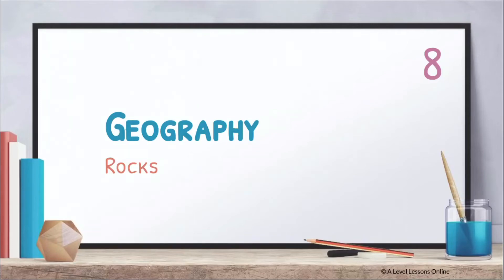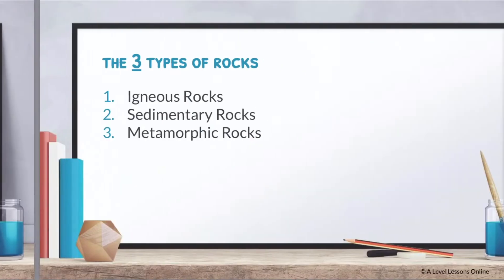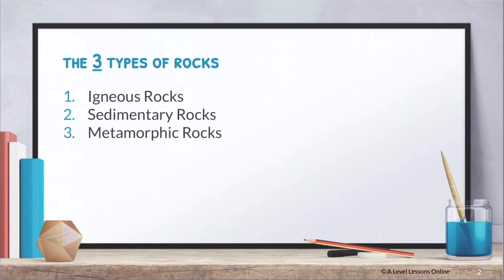We're back again with physical geography. Today we're going to be covering part 8 on rocks. We'll dive right into everything specific about rocks — what you need to know and what the exam requirements are. Firstly, you need to understand that there are three main types of rocks: igneous, sedimentary, and metamorphic. Take note of these terms.